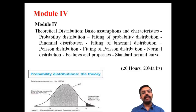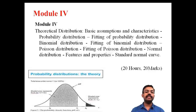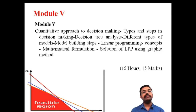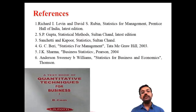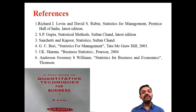The fourth module covers theoretical distributions — binomial, Poisson, normal distribution, and the standard normal curve — carrying 20 marks and 20 hours. The fifth module covers decision making and linear programming, carrying 15 marks and 15 hours. Reference books by standard authors are used. Thank you so much for watching.